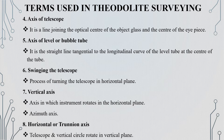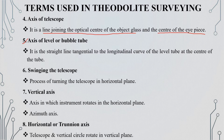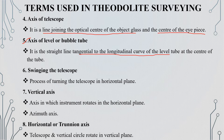Next is the axis of the telescope, which is the line joining the optical center of the objective and the center of the eyepiece. The axis of the level, or bubble tube, is a straight line tangential to the longitudinal curve of the level tube at the center of the tube. Swinging the telescope means rotating it in the horizontal plane.